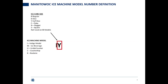After that, we're always going to call out the ice cube size, except for on that Ice Beverage series, which is always going to be IB. This one has the letter Y for half dice, and above, you'll see the other options of cube size that we have.